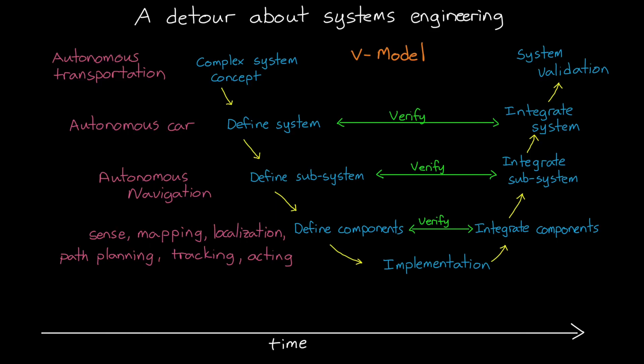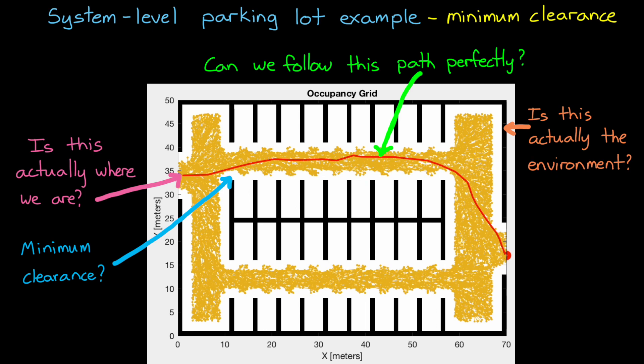Now, if the definition of the system was done correctly, that's this left side of the V, then we would have an overall minimum clearance requirement at the system level. And the requirements on all of these components would be set such that when they're all combined into the whole system, the high level requirement is met. And so when we run a test or run a simulation, we would verify each of the components meet their requirements, and then verify that the system meets its requirements.